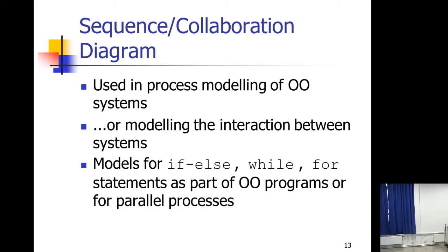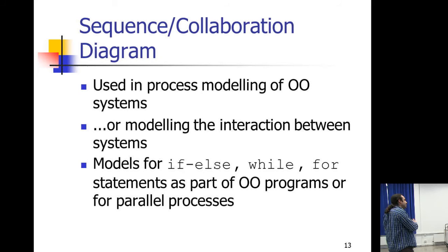Dynamic modeling can also be represented with sequence and collaboration diagrams, but these can be a little more tricky. I don't think every project requires a sequence diagram. I've seen many final year projects that produce bad sequence and collaboration diagrams. So if you don't really know how to create a sequence diagram, don't do it — an activity diagram will probably be good enough. Use a sequence or collaboration diagram if you're modeling interactions between different systems and you can justify why, and only if you know how to do it correctly.